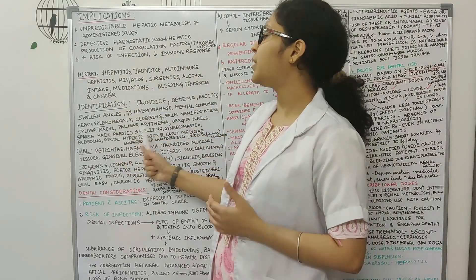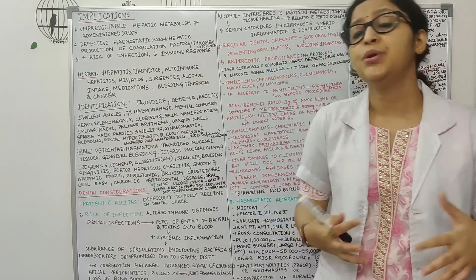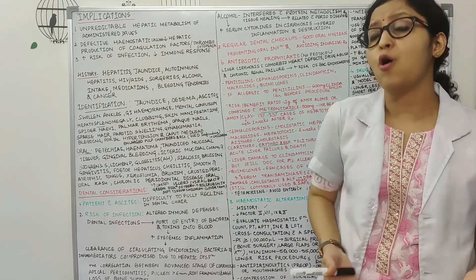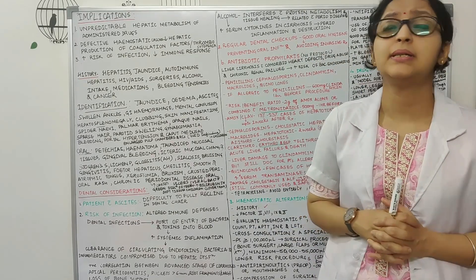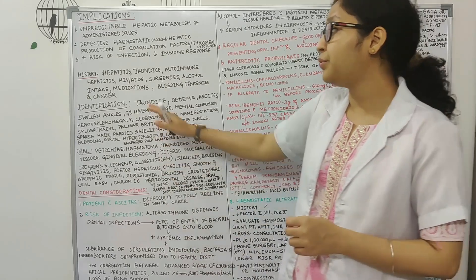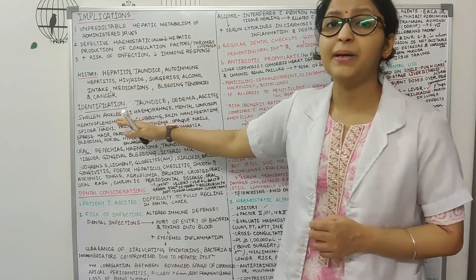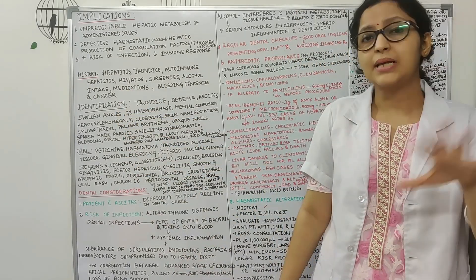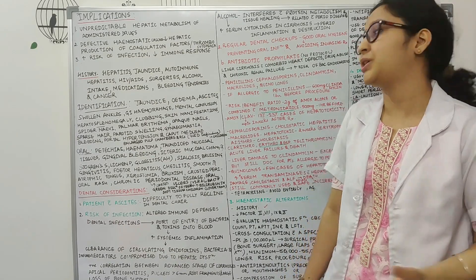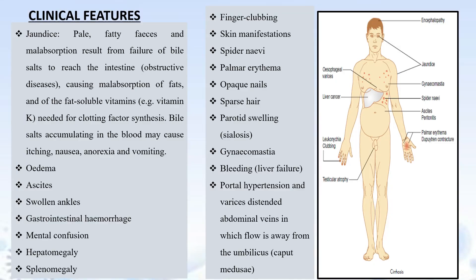Then another thing, sometimes the patient will not be telling you or giving you a direct history of any kind of liver disease. In such patients it's very important that you know how to identify the patient. You need to know some basic signs which can be seen in such patients. You can see jaundice. You can see clubbing of fingers. Then you can also see ascites in the patients where there is fluid collection in the peritoneum. Swollen ankles.